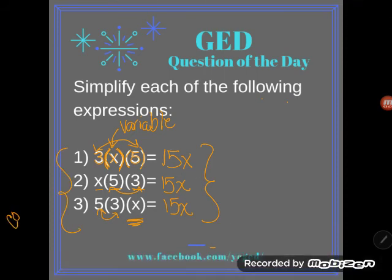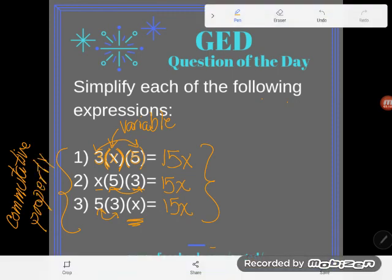And that, by the way, also has a name. It's known as the commutative property. But whether you know the name of the property or not, realize that you can group how you want. You can change the order how you want. In multiplication, you're still going to get to the same place. I got to 15x in each of these.